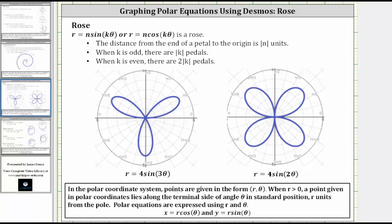In this lesson, we will use desmos.com to explore the roses given by the polar equations r equals n sine k theta, or r equals n cosine k theta.